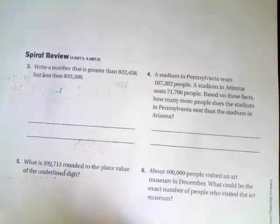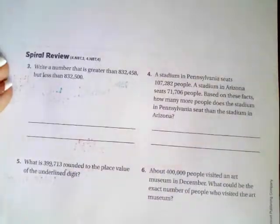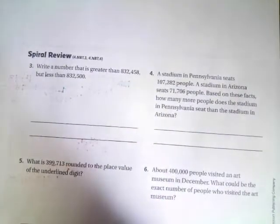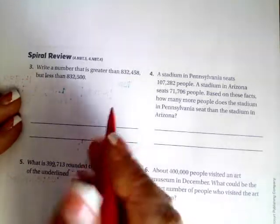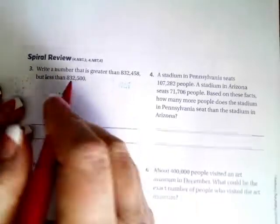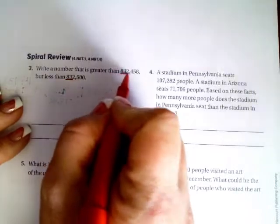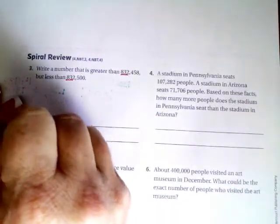Just like always, we're going to go down and do the spiral review. It says to write a number that is greater than 832,458 but less than 832,500. You see that our 832s are the same. Those two numbers are the same. They don't have to change.